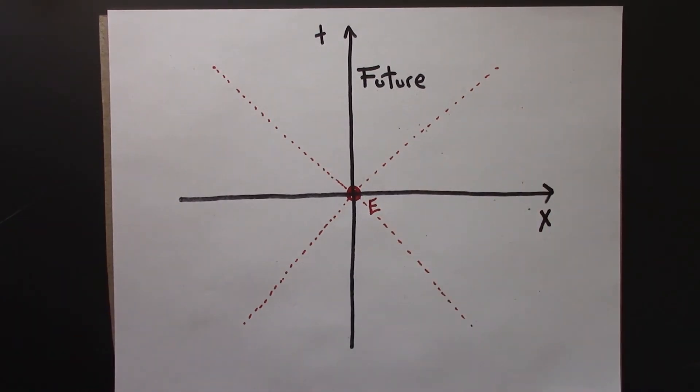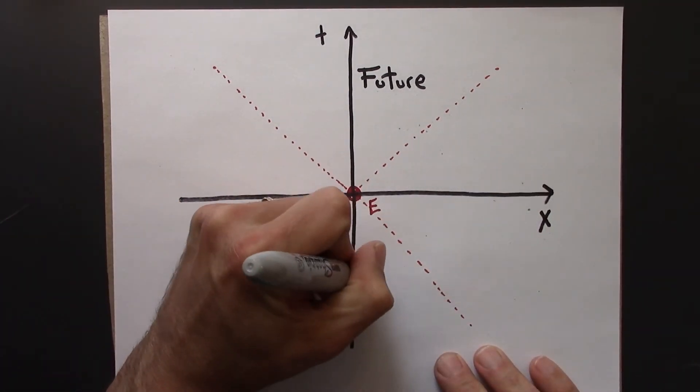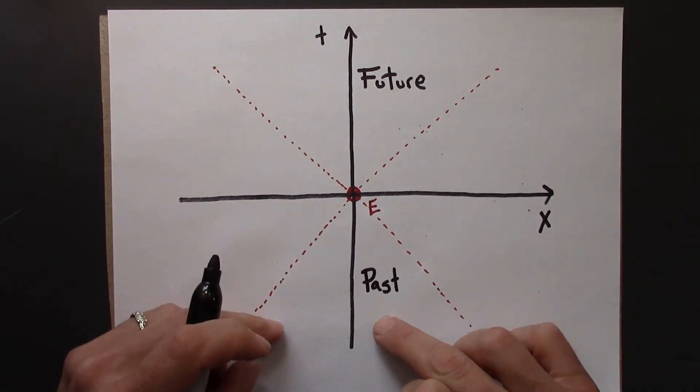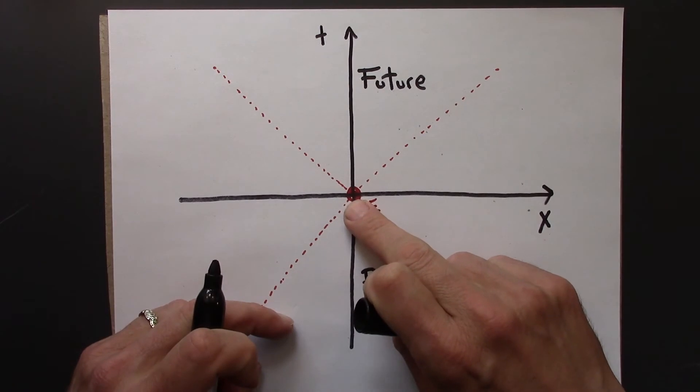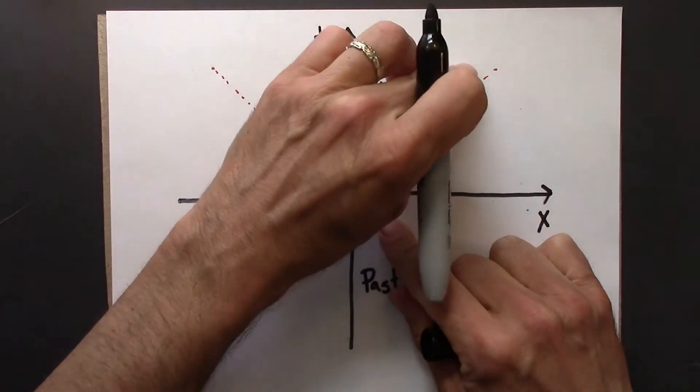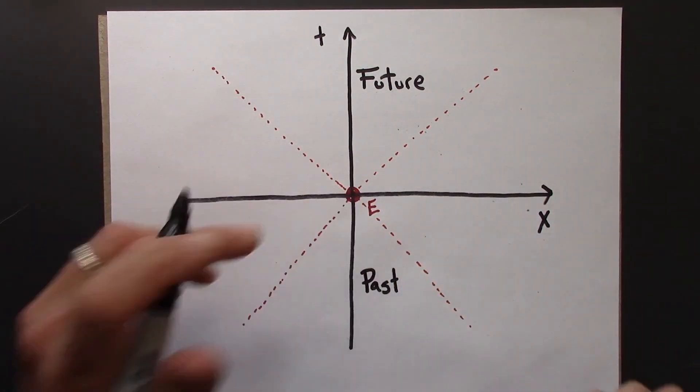So this is sometimes called the past of e. Past meaning these are all of the events that could cause or influence e, that are part of e's past. This region here is all possible events that e could influence.